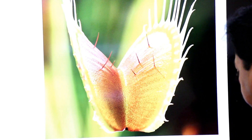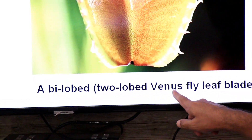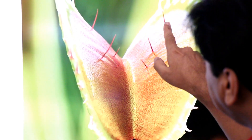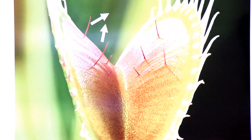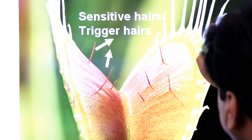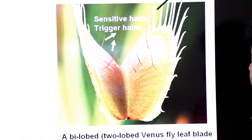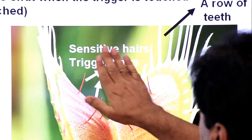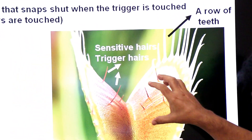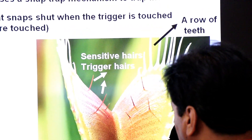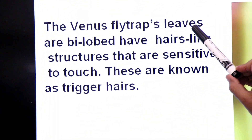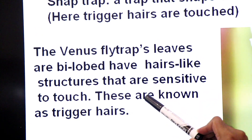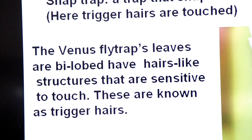Look at the leaf of the Venus fly trap — it is bilobed, meaning it has two lobes. This is lobe one and this is lobe two. You can also see sensitive hairs, called trigger hairs, on the leaf. The sides of the lamina contain a row of teeth-like structures. The bilobed lamina has trigger hairs that are sensitive to touch.